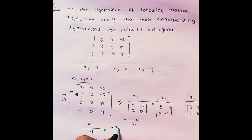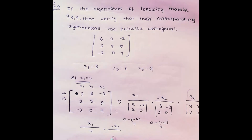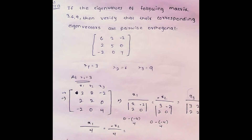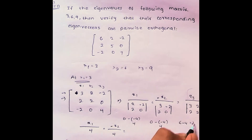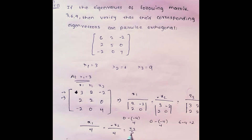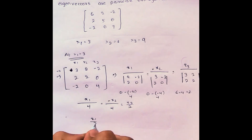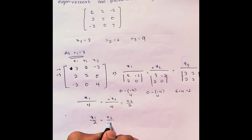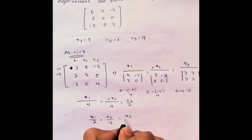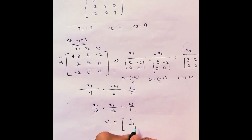For minus x2, we get 3 into 2 minus 2 into 0, giving 4, so minus x2 by 4. For x3, we get 3 into 2 minus 2 into 2, giving 6 minus 4 equals 2, so x3 by 2. Simplifying: x1 by 2 equals x2 by minus 2 equals x3 by 1. So the eigenvector V1 is equal to (2, minus 2, 1).